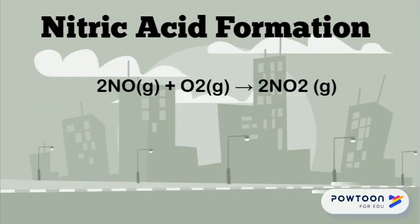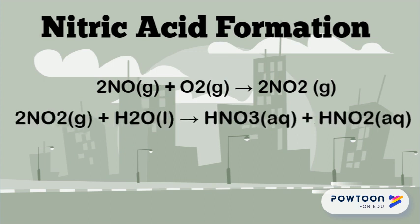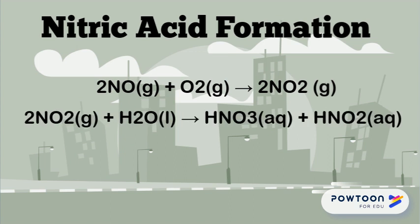The nitrogen oxide released by the industrial process reacts with oxygen in the atmosphere to form nitrogen dioxide. Later, nitrogen dioxide reacts with water vapor to form nitric acid and nitrous acid. However, in this reaction, the major product being formed is nitric acid.